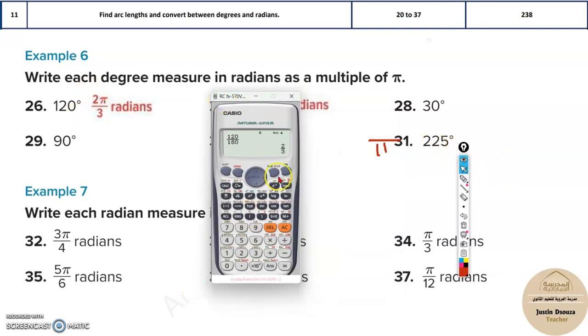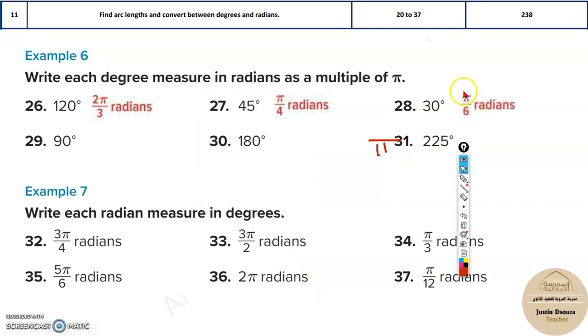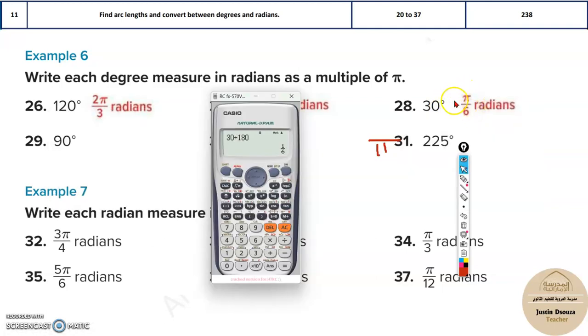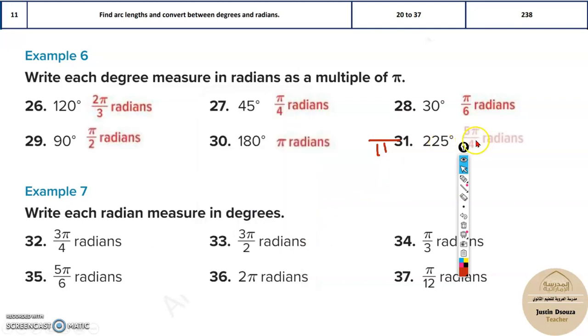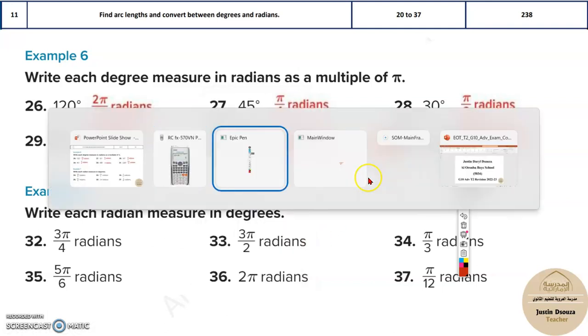And similarly, you can take anything, for example, say 30. Let's try 30. 30 divided by 180, it'll be 1 by 6 π radians, or π by 6, because 1 into π is π. Same way you can try any others, you will get the same answer. 225 by 180, it's 5 by 4 π radians.